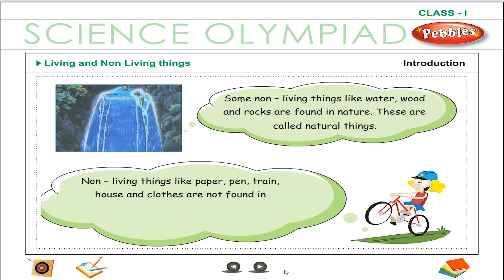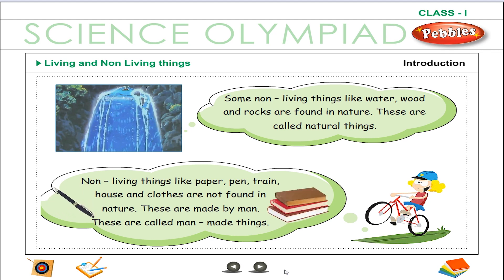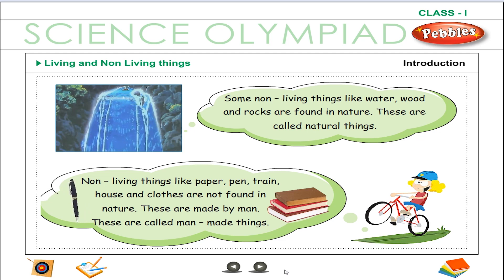Non-living things like paper, pen, train, house and clothes are not found in nature. These are made by man. These are called man-made things.